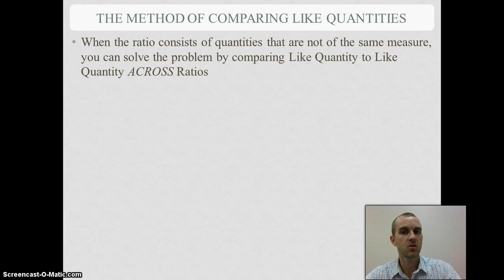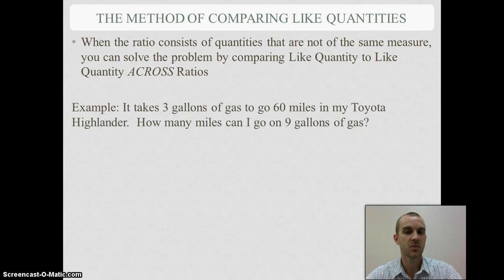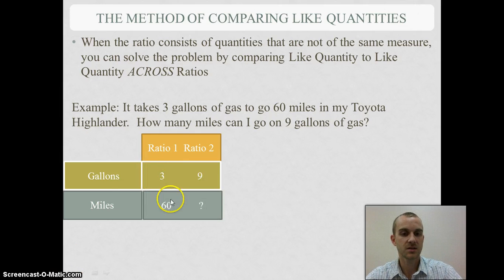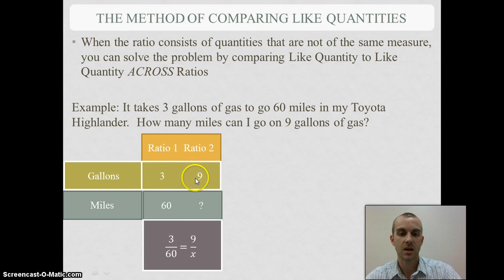Now I can also look at quantities across ratios and use that to help me find the solution. Same problem: I know my first ratio had 3 gallons and 60 miles. My second ratio had 9 gallons and I don't know the miles. What I want to say to myself is how can I get from 3 to 9? To do that, I multiply it by 3.